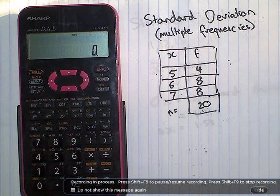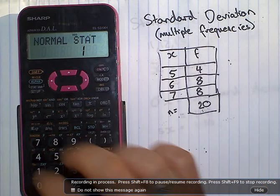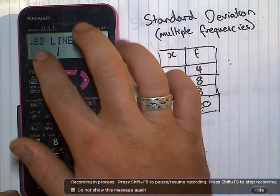First thing is to get into statistics mode on your calculator. Press mode, statistics, one, and we want SD for standard deviation.